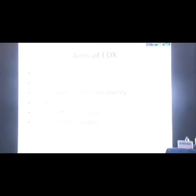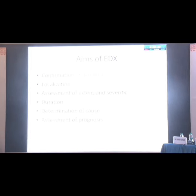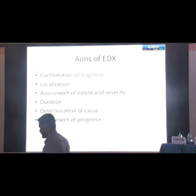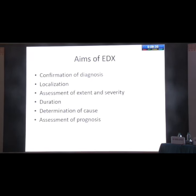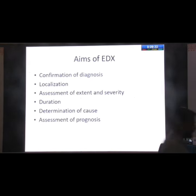Good afternoon everyone. I would be talking briefly about the basics of electrodiagnosis for nerve and plexus injury. The role of electrodiagnosis is limited compared to what it was 20 years ago, as very advanced neuroimaging has come. The aims of electrodiagnosis are diagnosis, localization, and assessment of extent and severity — localization and assessment of extent and severity being the most important aims.